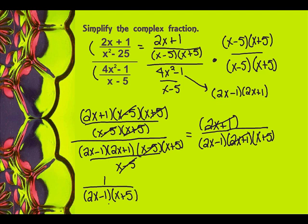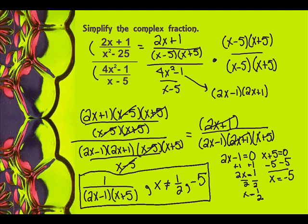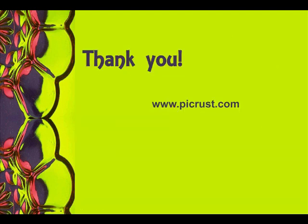You can leave this as your answer. Some instructors will want you to FOIL it. But remember, we need to figure out where we have zeros in the denominator. Set 2x minus 1 equal to 0: add 1, so 2x equals 1, divide by 2, x equals 1 half. Then set x plus 5 equal to 0: subtract 5 from both sides, so x equals negative 5. So x cannot equal 1 half or negative 5, and this whole thing is your answer. If you're missing a part, your instructor will count that wrong. Be sure to check out www.pycrest.com for lots of free math worksheets with the solutions.